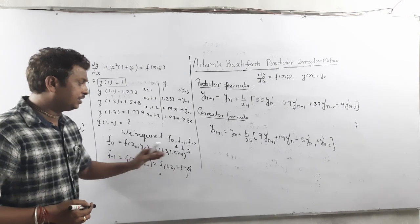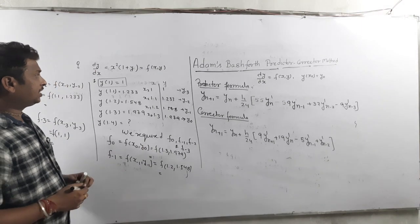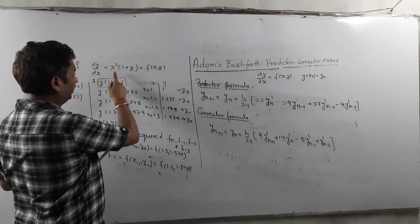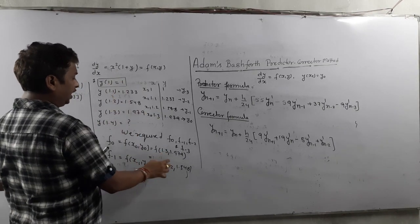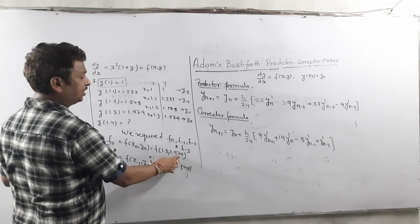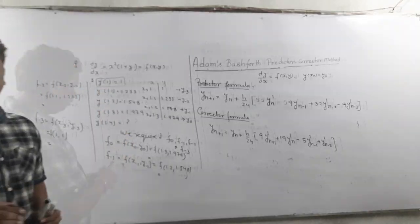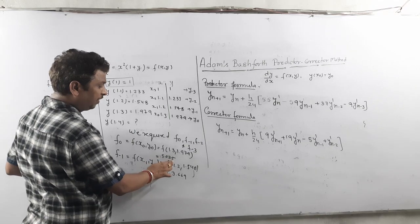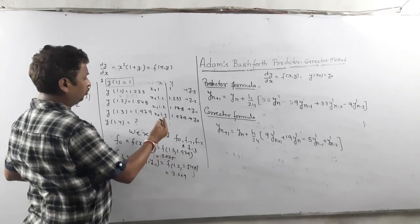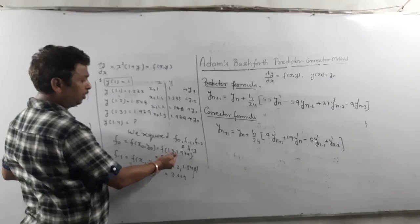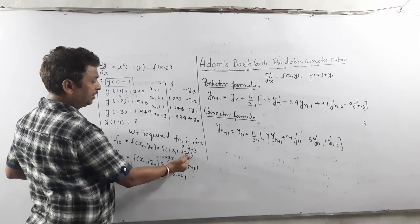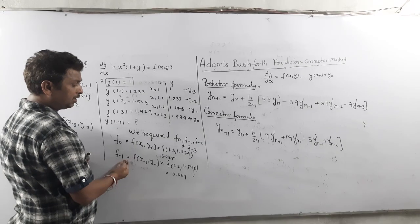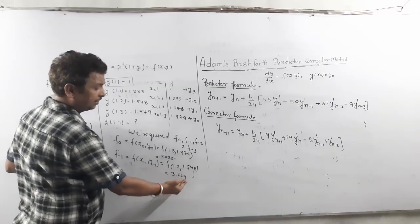So what x value do we put for f0? We put x = 1.3 and y = 1.979. Just substitute those into the formula and calculate. The result is f0 = 5.035. For f(−1), we put x = 1.2 and y = 1.548, giving f(−1) = 3.669.